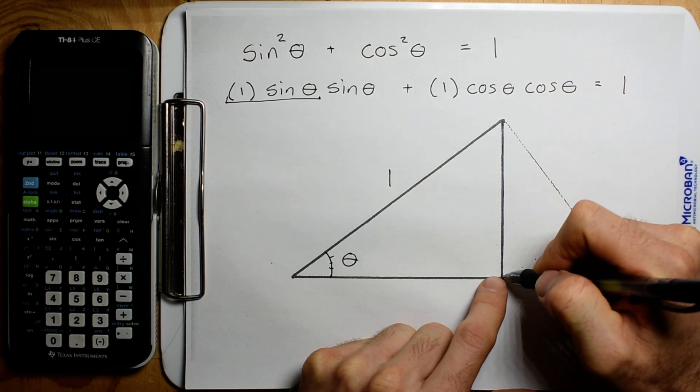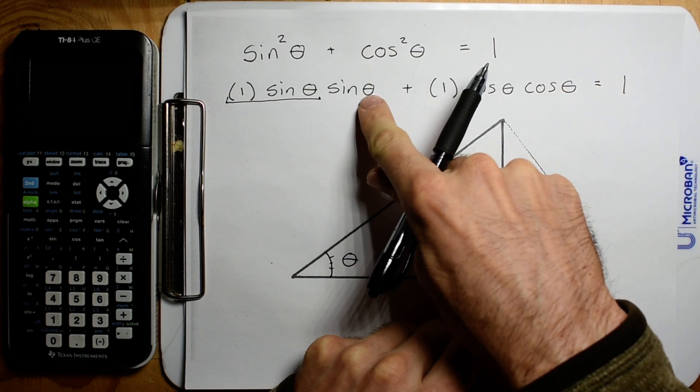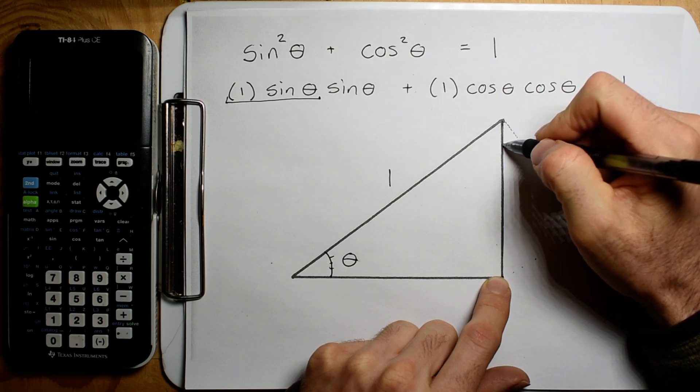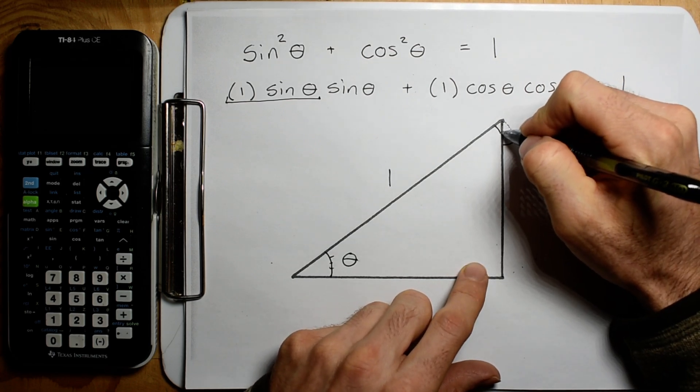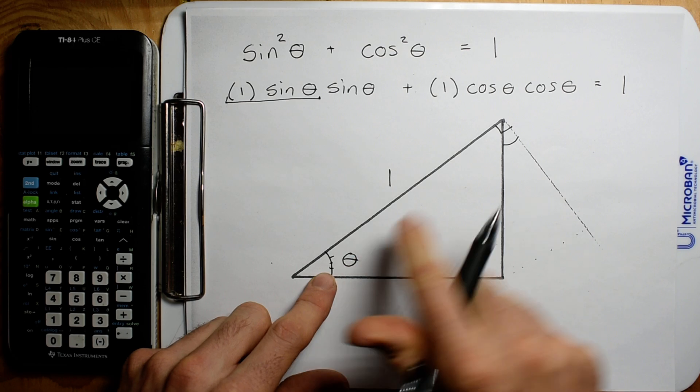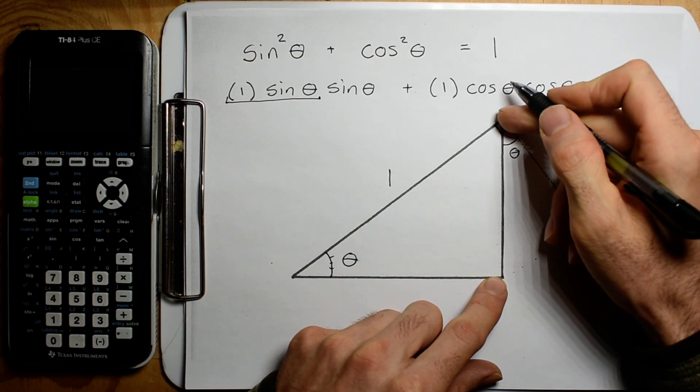If you have a 90 degree here, this angle is the same as that angle. This is the hypotenuse. I'm going to drop down a 90 and we're going to take the sine component.